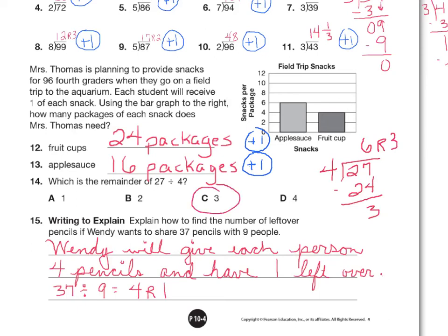Finally, we're looking at number 15. Explain how to find the number of leftover pencils if Wendy wants to share 37 pencils with 9 people. So if I did 37 divided by 9, I would end up with 4 remainder 1. I wrote a sentence for you. You can check to see how close you are to that. Wendy will give each person 4 pencils and have 1 left over.